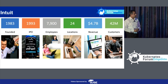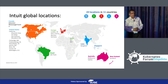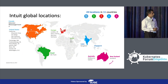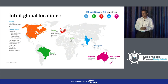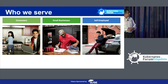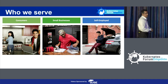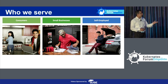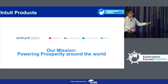We have around 8,000 employees across multiple locations — 11 countries and 24 locations. We have around 42 million customers across different segments: the consumer group, which mainly uses our tax product, and small business and self-employed customers. These are our products.